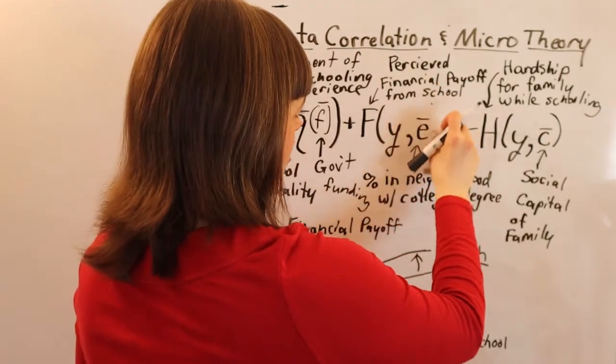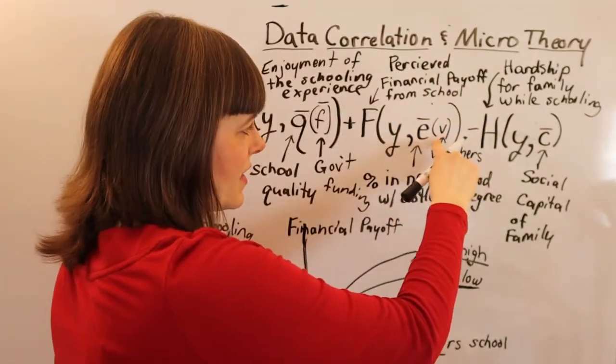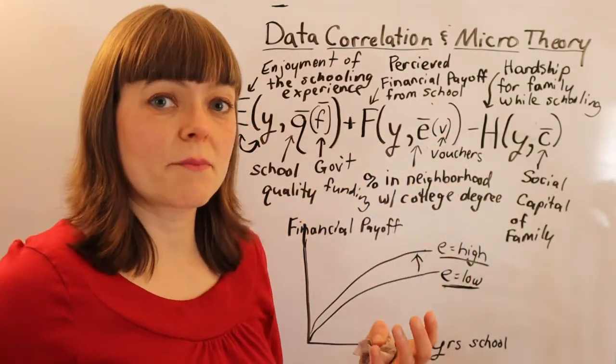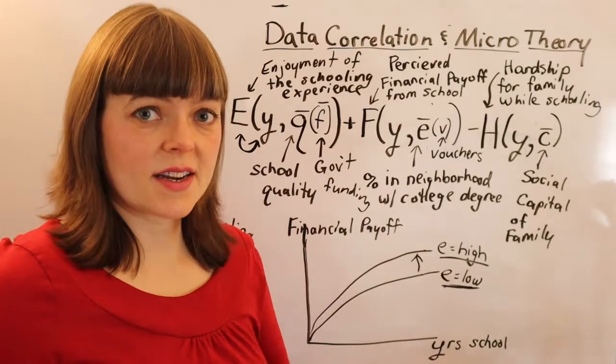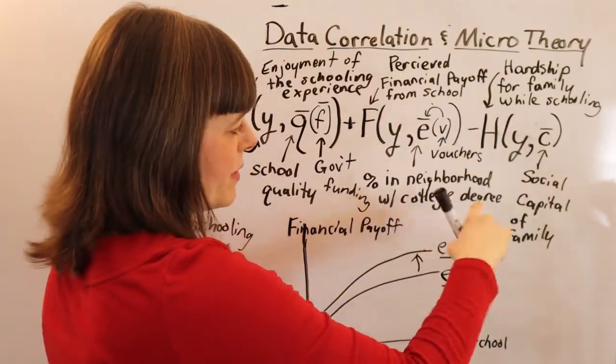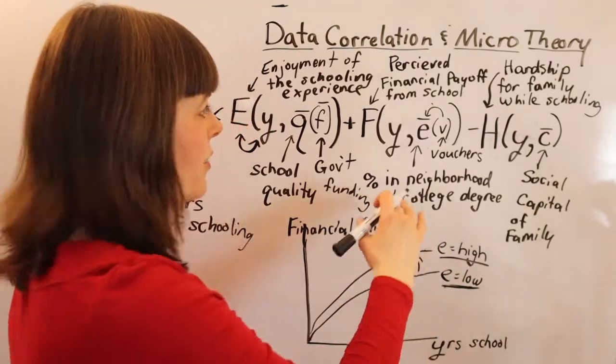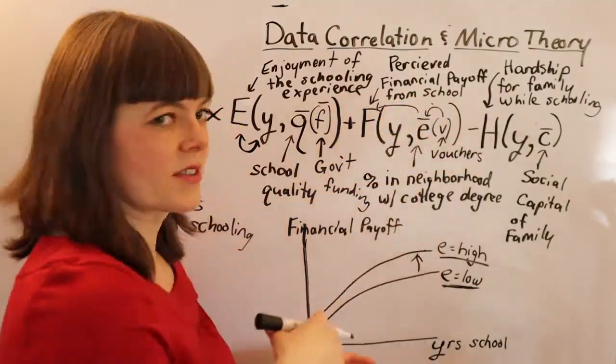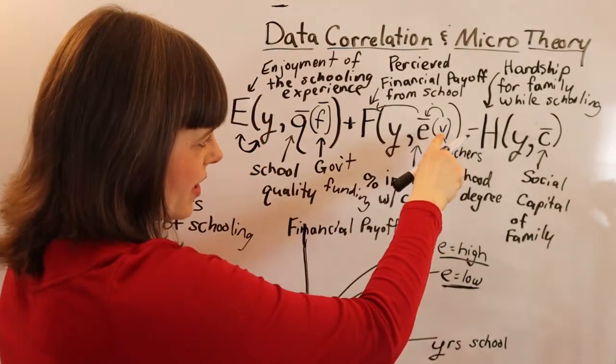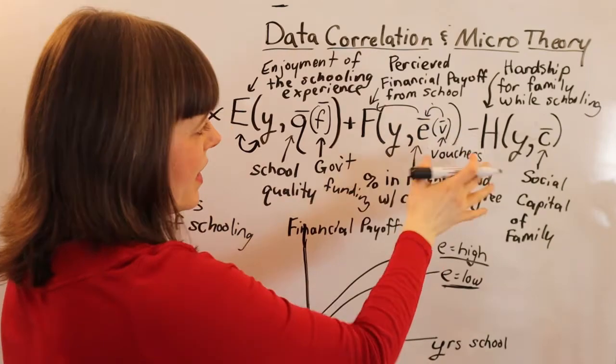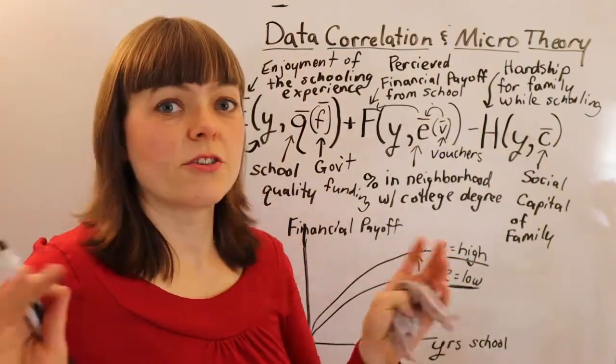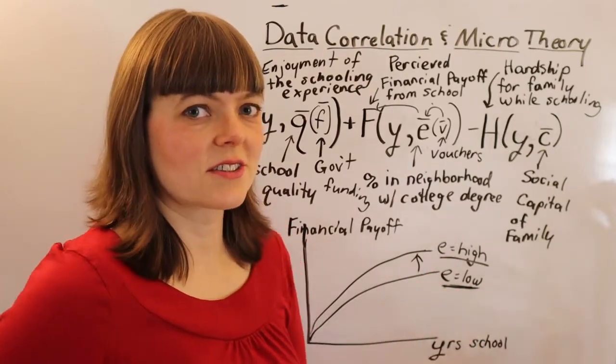We can do the same thing here where we can put a government policy variable in. The government has vouchers to help low-income people move to more mixed-income neighborhoods. That voucher is going to influence the percent of people in these kids' neighborhoods who have gone to college, and that of course is going to influence their perception about the association between college and schooling. So we're putting in the government variable into this model where it's contextualized in a way that it's not if you're just looking at the correlations. So finally, let's do the social capital graph.